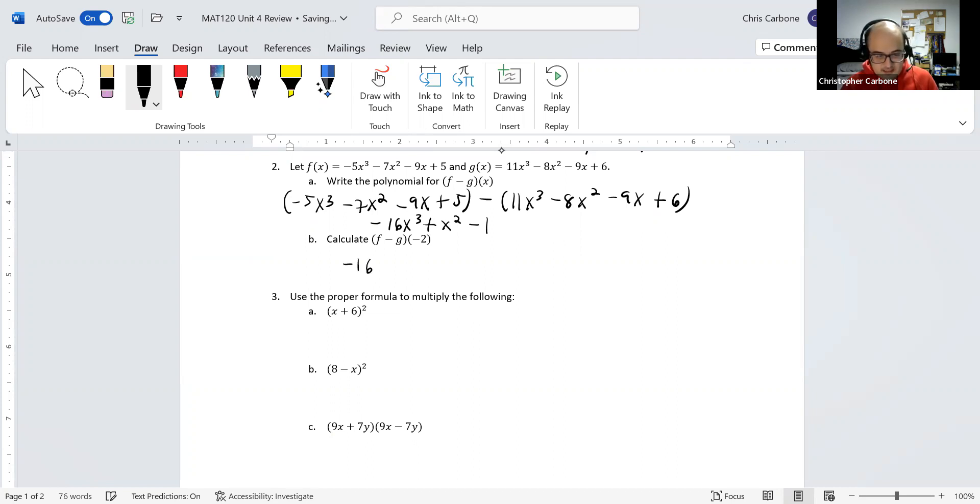So negative 16 times negative 2 cubed, plus negative 2 squared, minus 1. So negative 16 times negative 8, plus 4, minus 1.